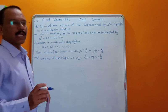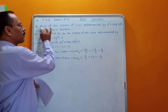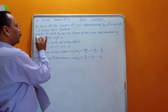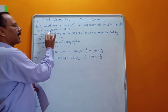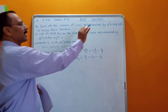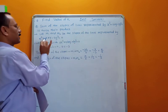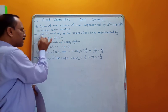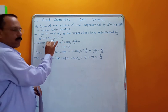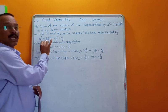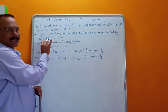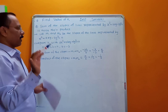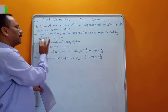Twice their product means sum of the slopes is twice their product. Let m1 and m2 be the slopes of the lines represented by x² + kxy − 3y² = 0. This is the joint equation of a line; there are two lines, therefore m1 and m2 are the two slopes.